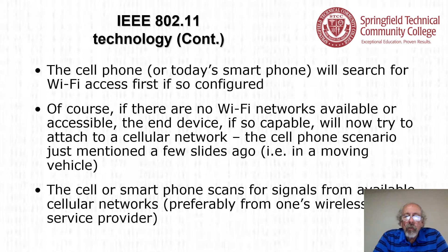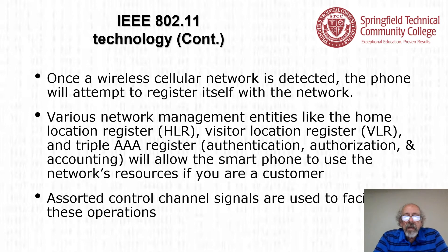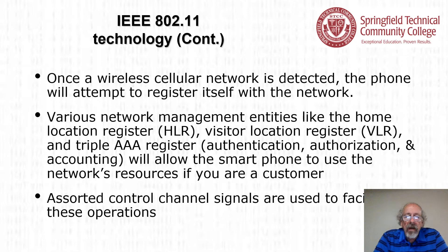Today's smartphone will search for Wi-Fi access first, if so configured. If no Wi-Fi networks are available, the end device will try to attach to a cellular network. The cellular smartphone scans for signals from available cellular networks, preferably from one's wireless service provider. Once detected, the phone attempts to register itself in the network. There are various network management entities like the Home Location Register (HLR), the Visitor Location Register (VLR), and the AAA register — which stands for authentication, authorization, and accounting — that allow the smartphone to use the network's resources. Assorted control channel signals facilitate these operations.